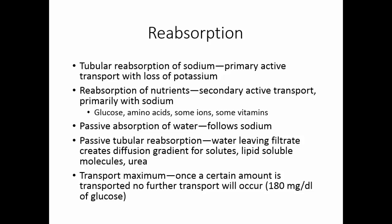Many things have what's called a transport maximum or a threshold. Once a certain amount of something has been reclaimed from the filtrate and returned to the blood, no more of that will be reclaimed. For example, glucose has a transport maximum of about 180 mg per deciliter. Once that blood level has been achieved, any additional glucose will leave in the urine.